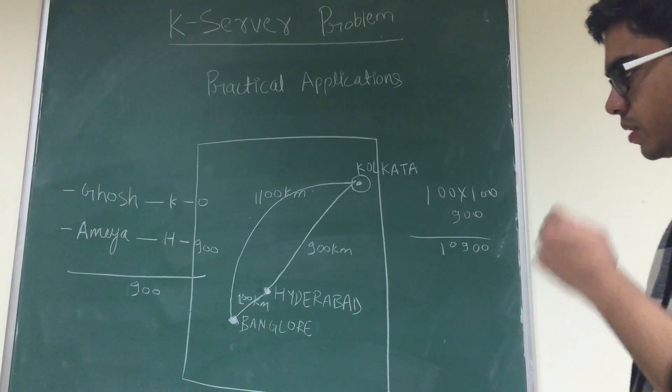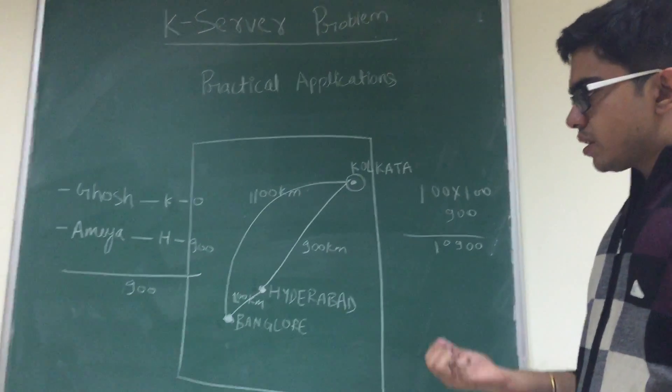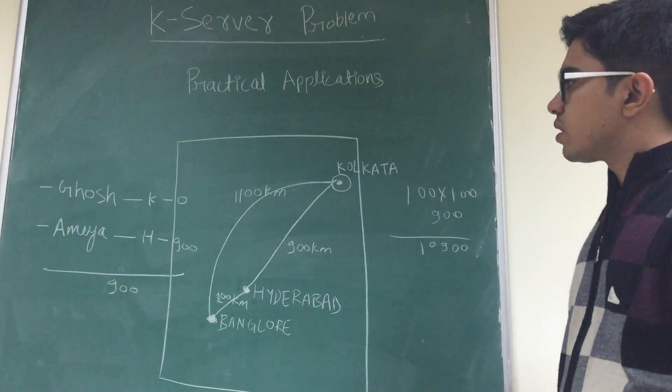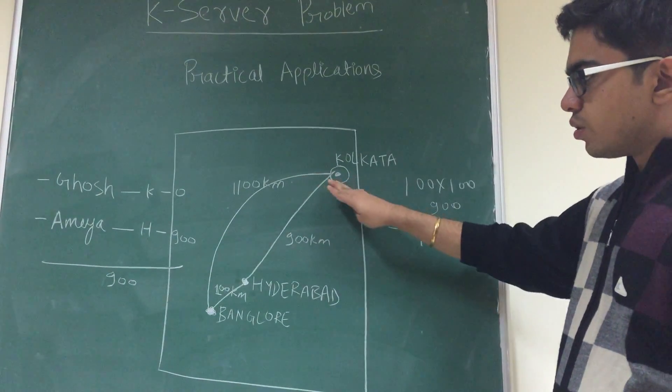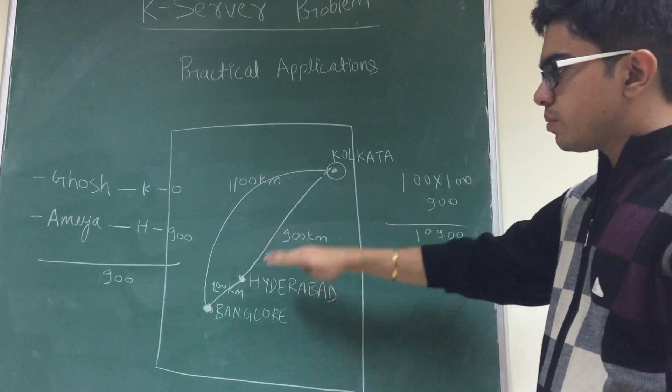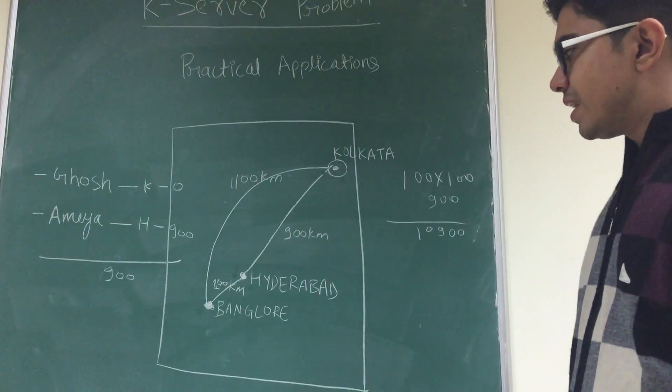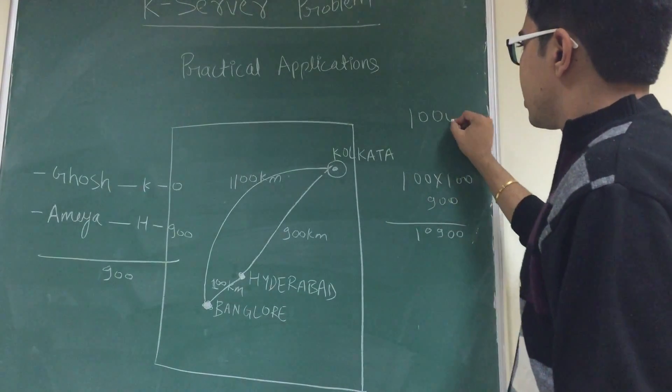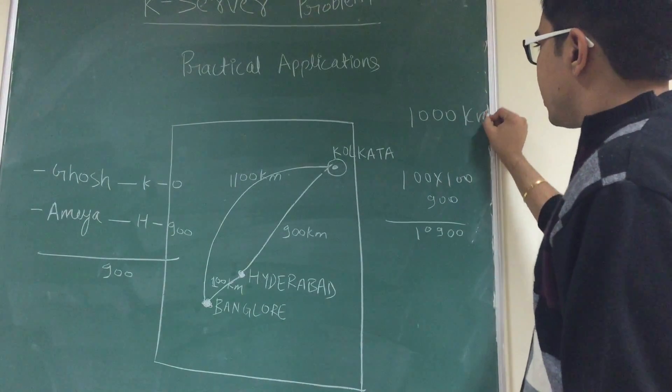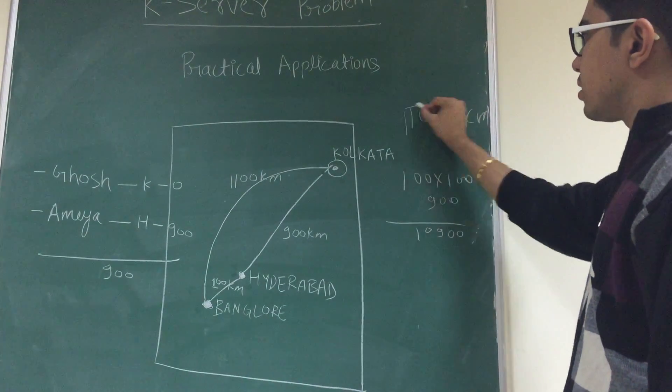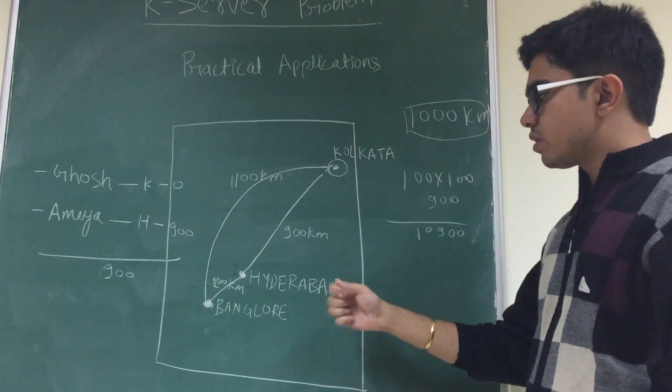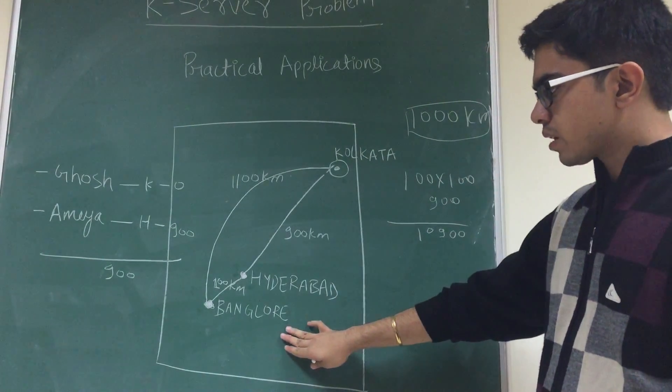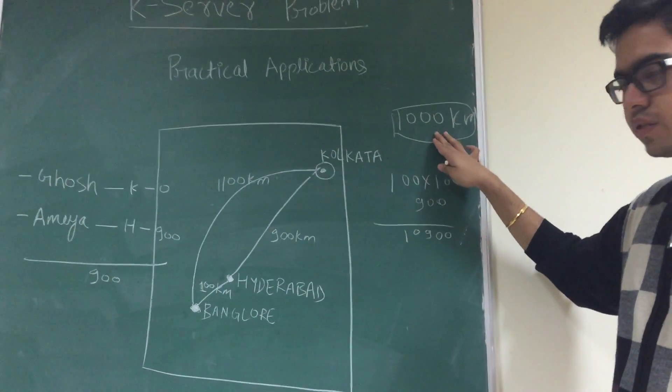But is this the optimal solution? What will be the logical optimal solution? Let's say I send Ghosh to Hyderabad and Amya to Bangalore. This way, my total distance travelled by my employees will be 1000 kilometers in total. And this is it. Now, one employee is stationed in Hyderabad, another is stationed in Bangalore.